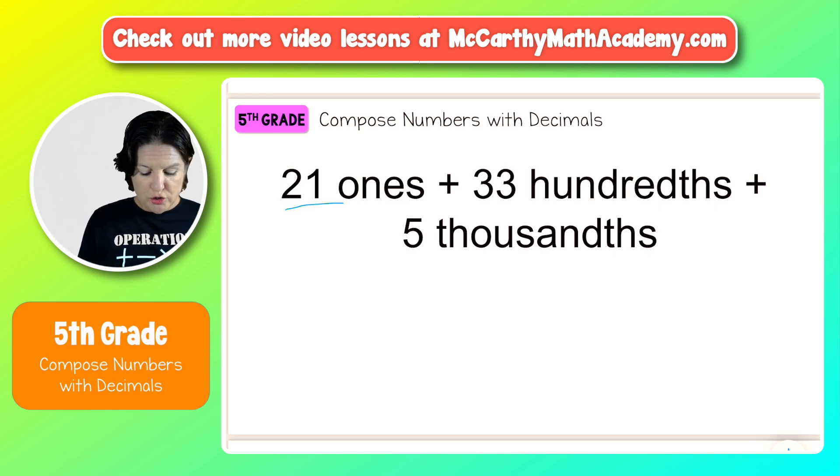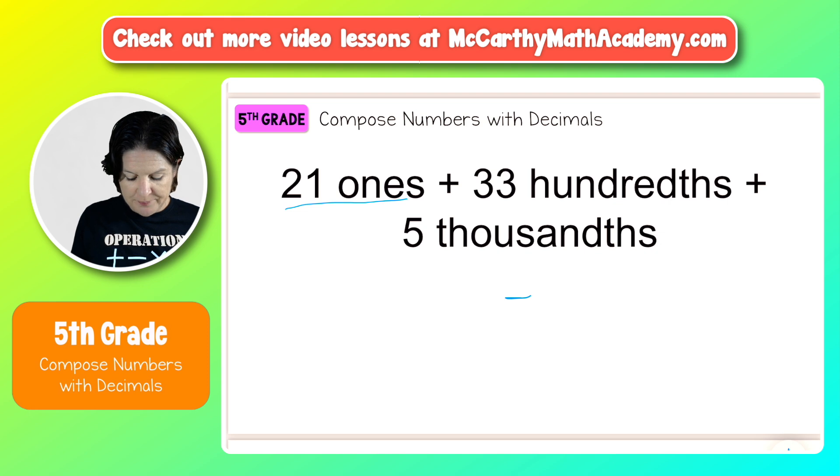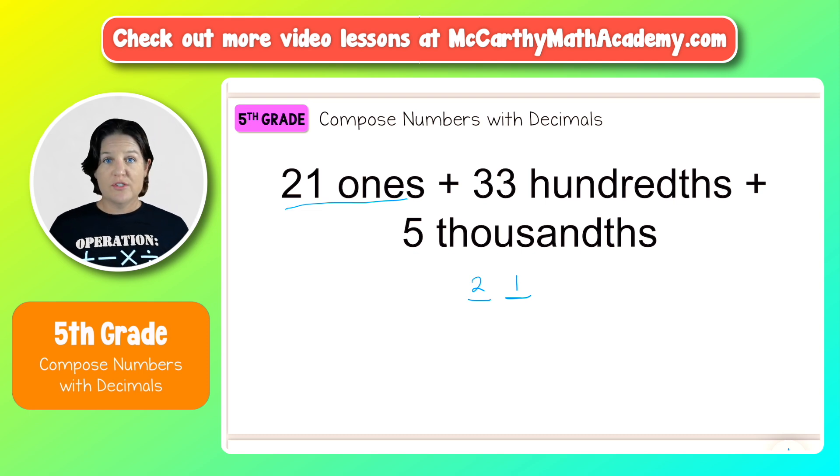Here's how I would suggest doing it. So first we have 21 ones. That means if we have the ones place right here, we need a one to land in the ones place, which means that two for 21, that two needs to be over here in the tens place. That would give us 21 ones. Since I know that I'm seeing hundreds and I'm seeing thousands, I know that there's going to be some decimals there. So I'm just going to go ahead and put my decimal right there.